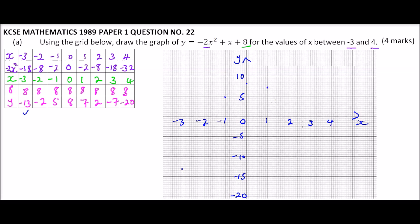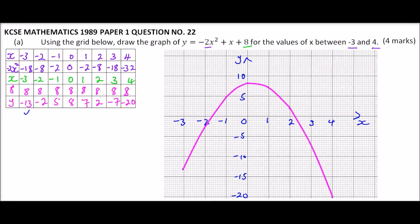When x = 2, y = 2; when x = 3, y = -7. Those are all the points needed to plot our graph. Using a freehand curve — remember, don't use a ruler for a quadratic graph. Label the graph: y = -2x² + x + 8.